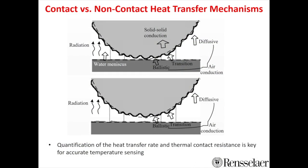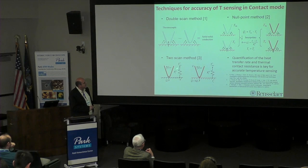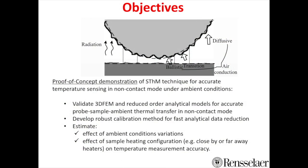For temperature sensing in contact mode, several methods have been developed to try to control this heat transfer. For the purpose of time, I'm not going to go through the different techniques currently employed for trying to do accurate temperature sensing in contact mode. I'd like to focus on demonstrating a proof of concept of a scanning thermal microscopy technique that works under ambient conditions and is able to do accurate temperature sensing in non-contact mode.